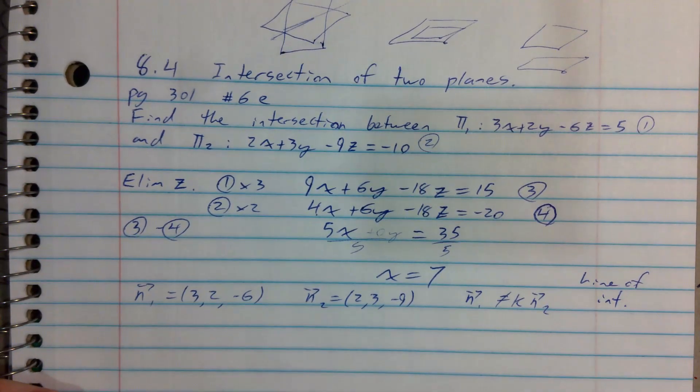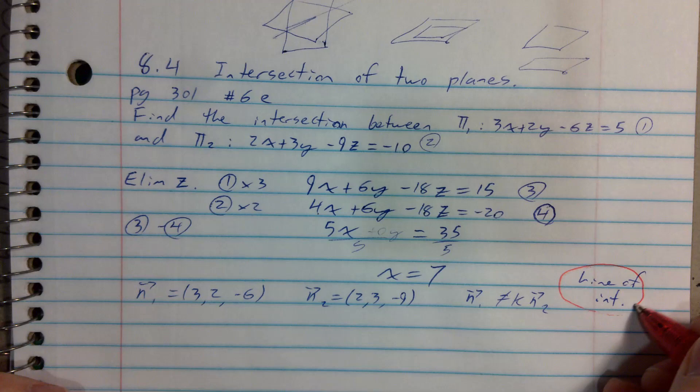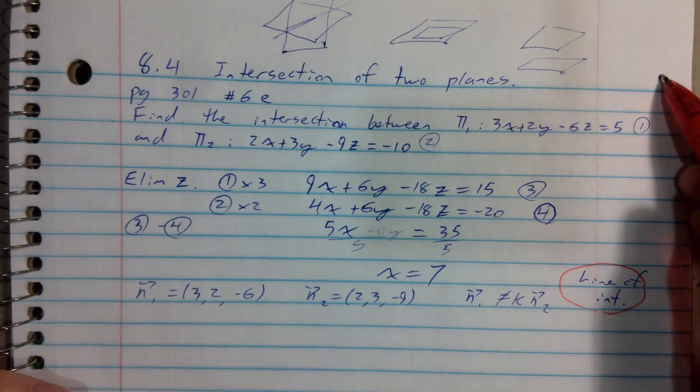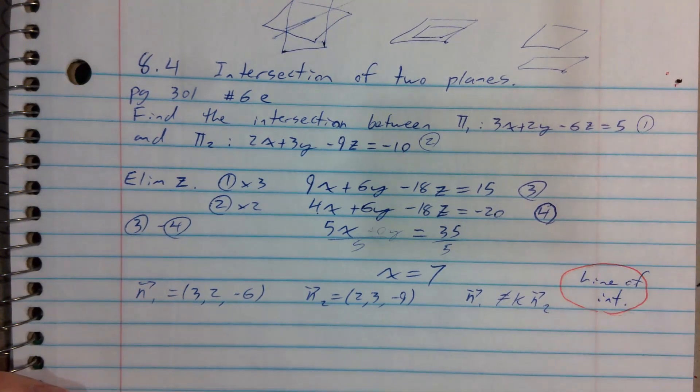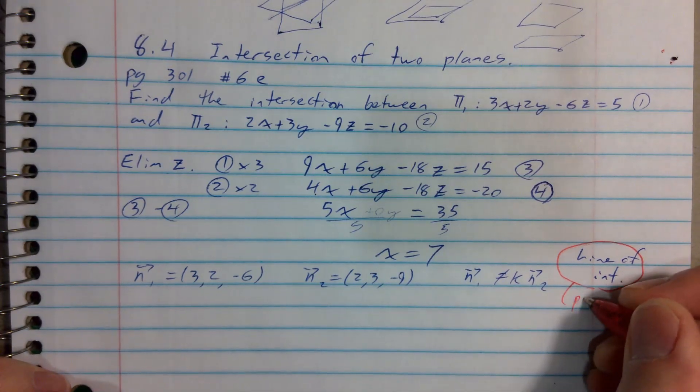Knowing what we're supposed to do next then, this helps a lot. Knowing that we're expecting a line of intersection. So to have a line of intersection, I'm expecting an infinite number of points, I suppose. But I'm also expecting a parameter.